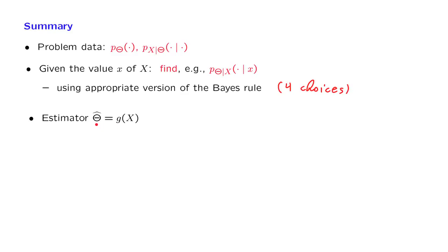What an estimator does is that it calculates a certain value as a function of the observed data. So g describes the way that the data are processed. Because X is random, the estimator itself will be a random variable.